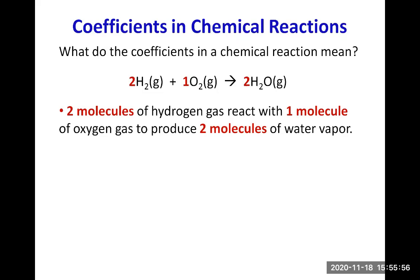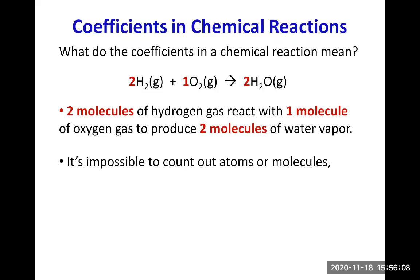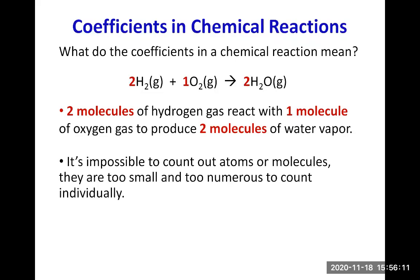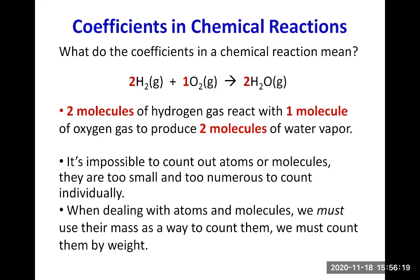But imagining a reaction happening between just two or three molecules is not realistic. There are many, many molecules in a sample, and it's impossible to count out atoms or molecules — they are too small and too numerous to count individually. So when dealing with atoms and molecules, we must use their mass as a way to count them. We must count them by weight.